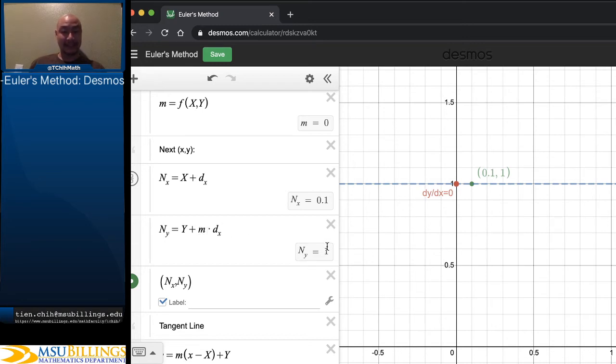So this m times delta x, this is delta y. In this case, that is going to be 0. And so the total sum here is still 1. The slope is 0, so we're just going to go across. And then what the new point is going to be is going to be labeled on the side here: Nx, Ny, (0.1, 1).